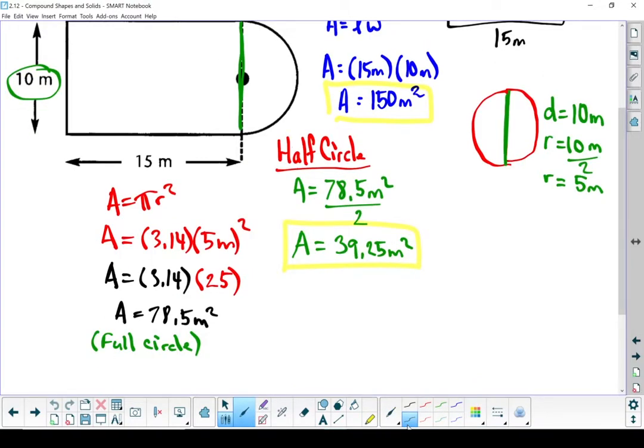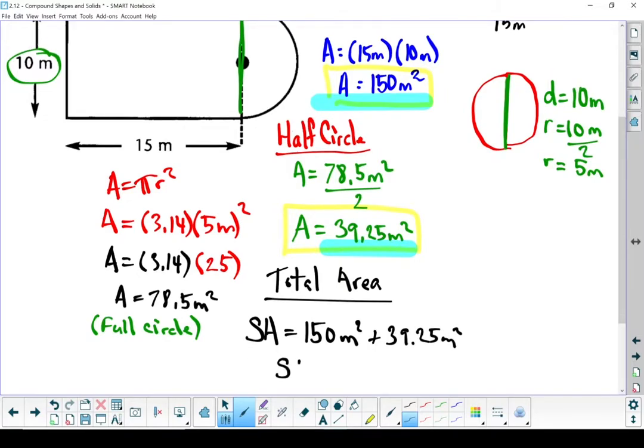Okay, and our last step here is to go through and find out what is my total area. To do that, we're just going to take those two areas we calculated earlier, 150 meters and the 39.25, add them together, and that will give us our total area. Our total surface area is 189.25 square meters. Put a box around it and that question is finished.